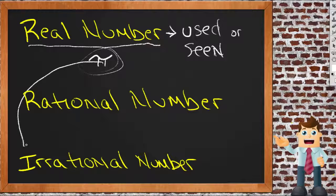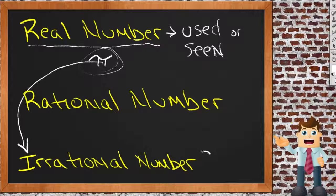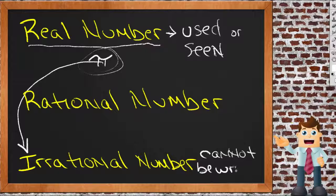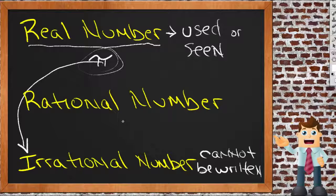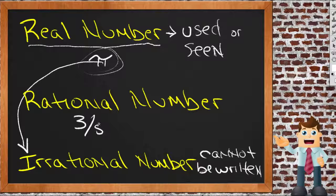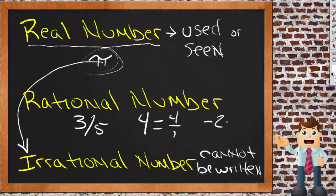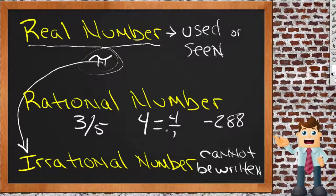It's not a number that can be written as a fraction. A rational number can be written as a fraction, say three-fifths. Three-fifths is a rational number. Four could be written as four over one, so it's a rational number. Negative 288 is a rational number. These are all numbers that can be written as fractions. Irrational numbers cannot be written as fractions. But irrational numbers and rational numbers are both part of the real number set.